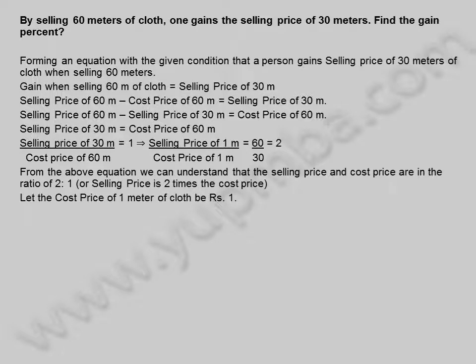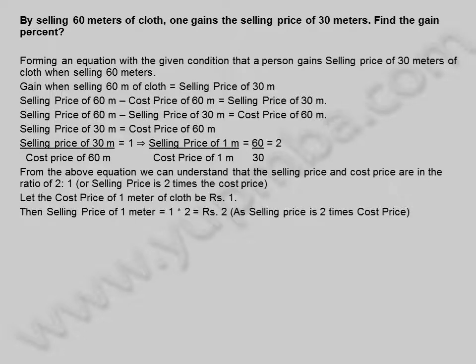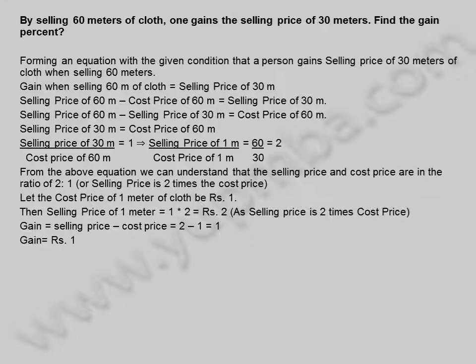Let the cost price of 1 meter of cloth be 1 rupee. Then selling price of 1 meter is equal to 1 × 2 = 2 rupees, as selling price is 2 times cost price. Gain is equal to selling price minus cost price = 2 minus 1 = 1 rupee. Gain percentage is equal to gain by cost price into 100 = 1 by 1 into 100. Gain percentage is equal to 100%.